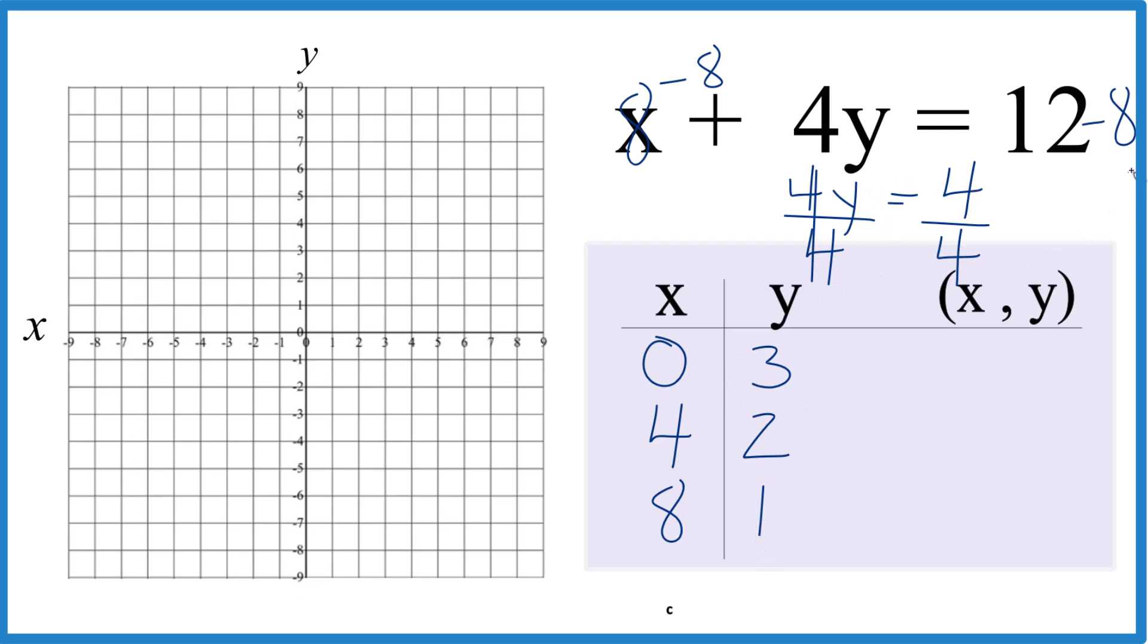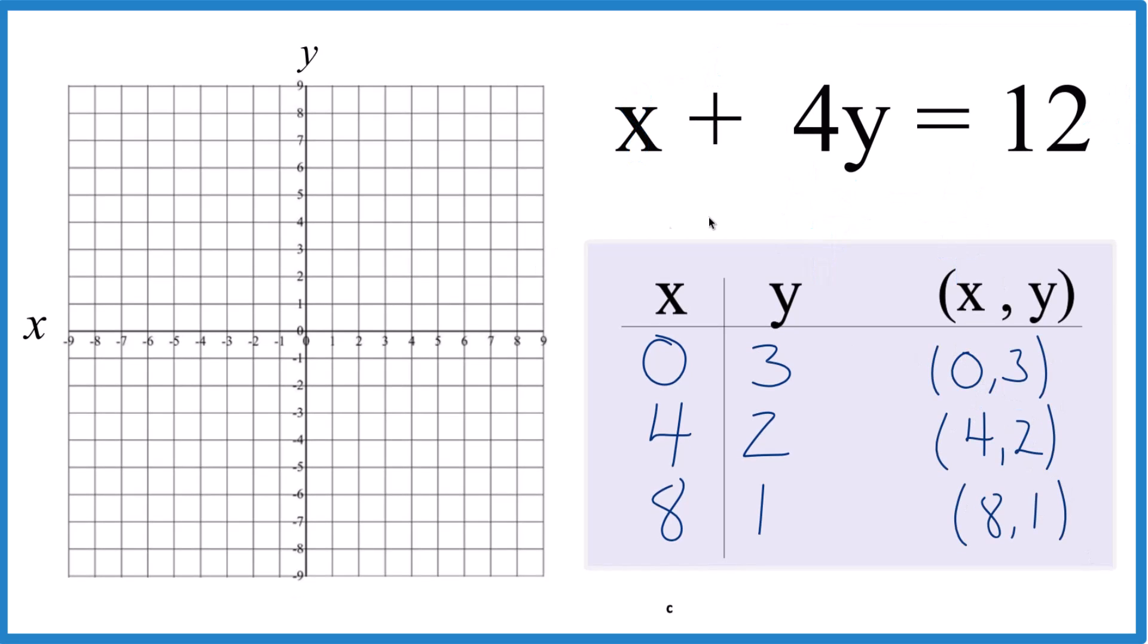So these are the points that we're going to graph for x plus 4y equals 12. So we go x is 0, y is 3. That's our first point. X is 4, y is 2, right there. And then x is 8, and y is 1.